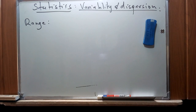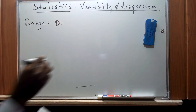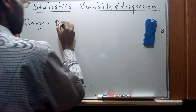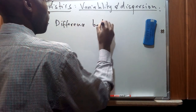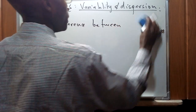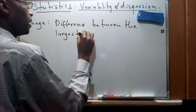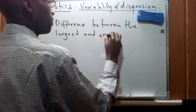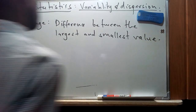Range basically refers to the difference between the largest and the smallest value in a set of data. For ungrouped data we are going to figure out how these trends can be dealt with.